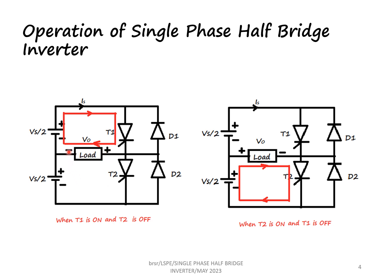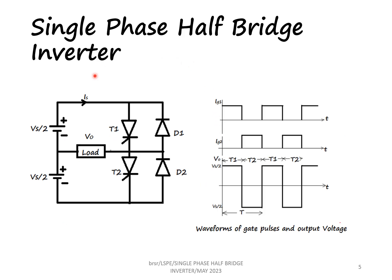If we carefully observe these two circuits, the current in the load flows from right to left when thyristor T1 is on, and from left to right when thyristor T2 is on — that is, it is alternating. By alternatively switching on T1 and T2, we can get a bidirectional output voltage in the load. The value of the output voltage has a magnitude of Vs/2.